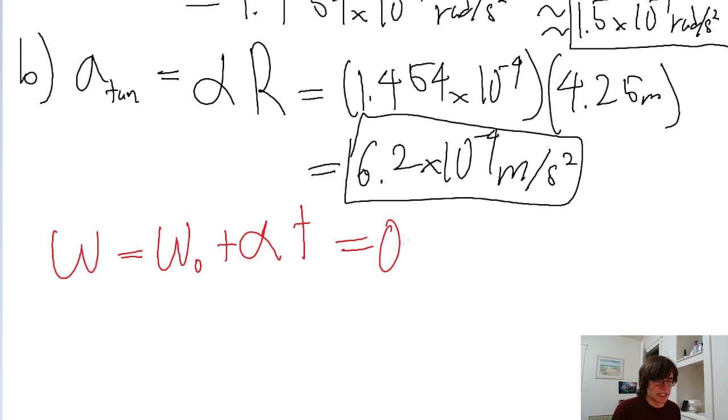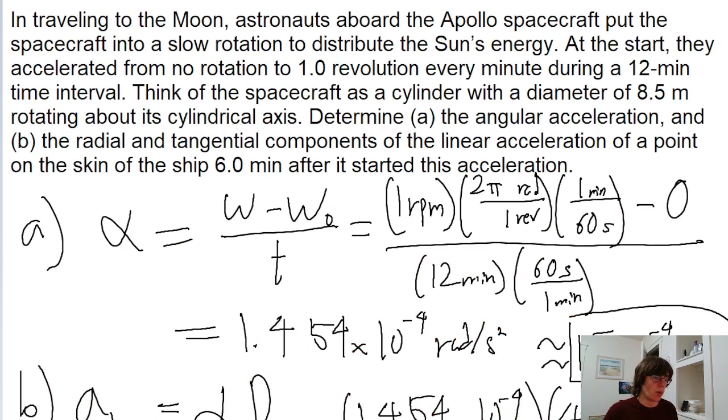The initial angular velocity is, of course, 0. The angular acceleration we found earlier is 1.454 × 10⁻⁴. And then the time is 360 seconds, because the problem is specifically asking for 6 minutes after the ship started that acceleration.